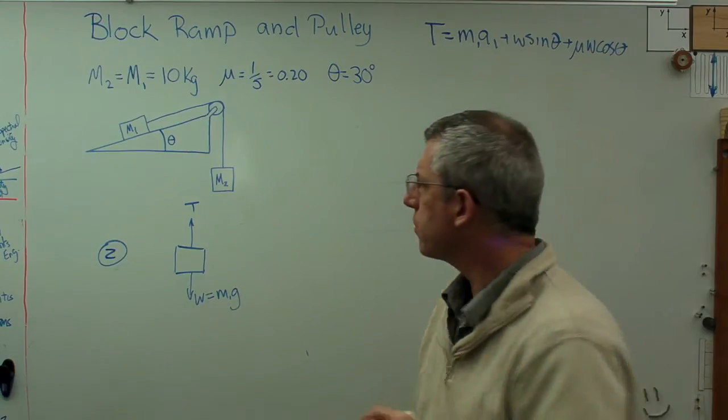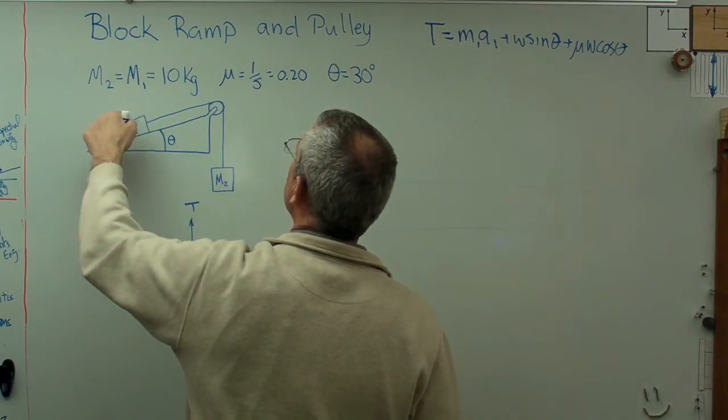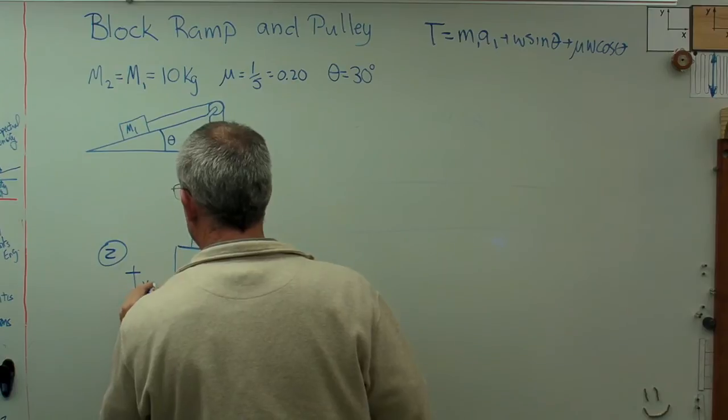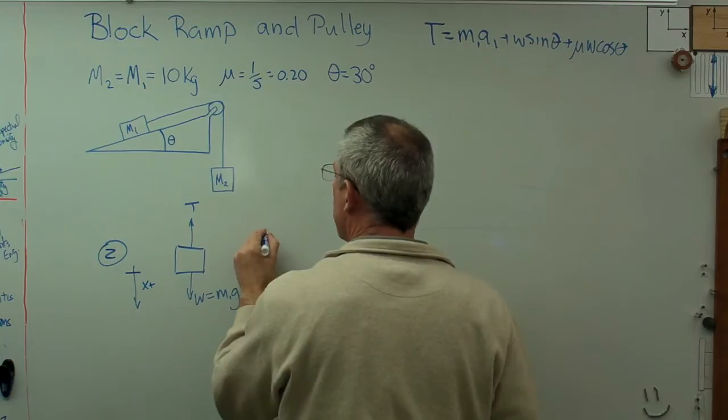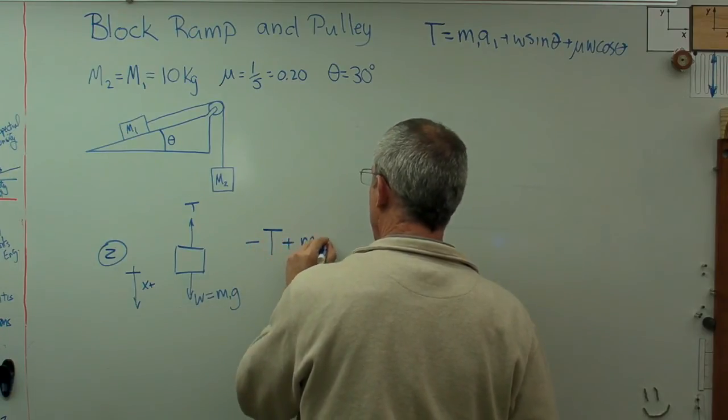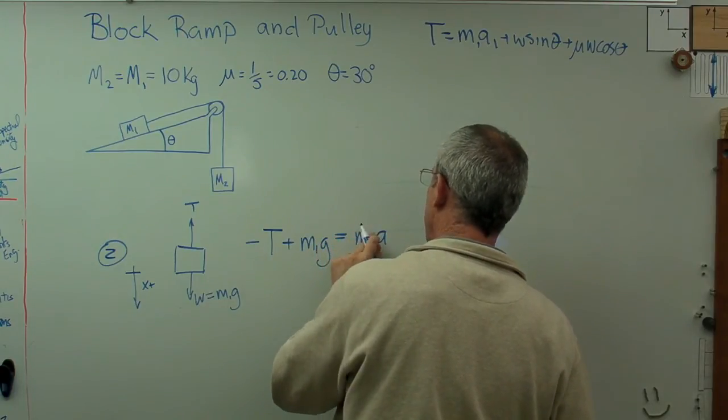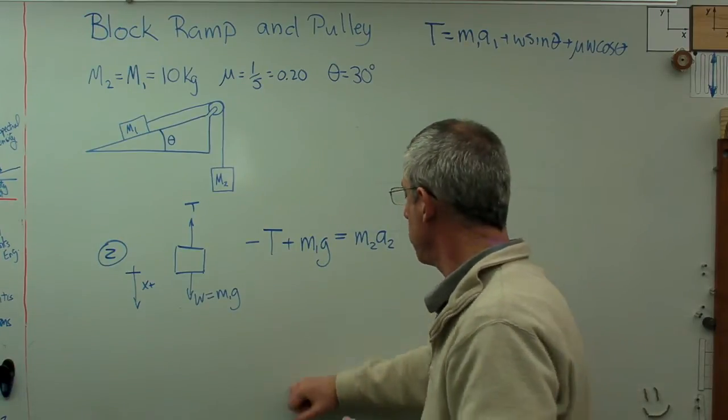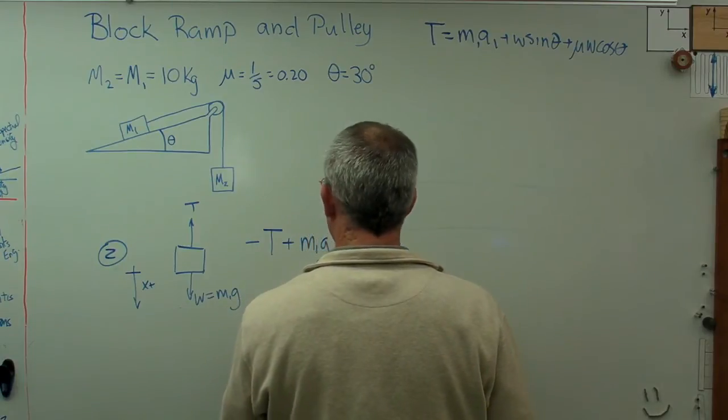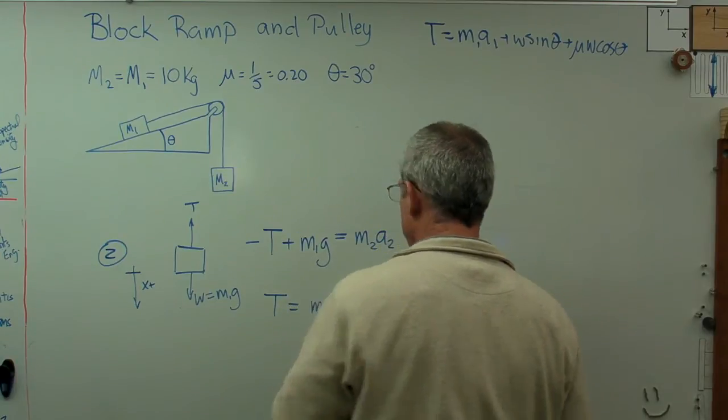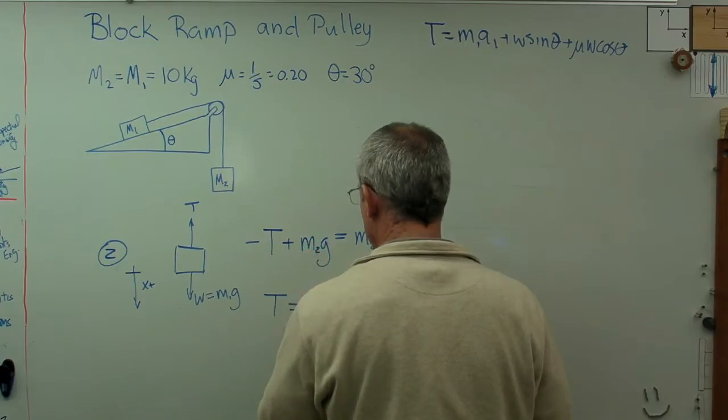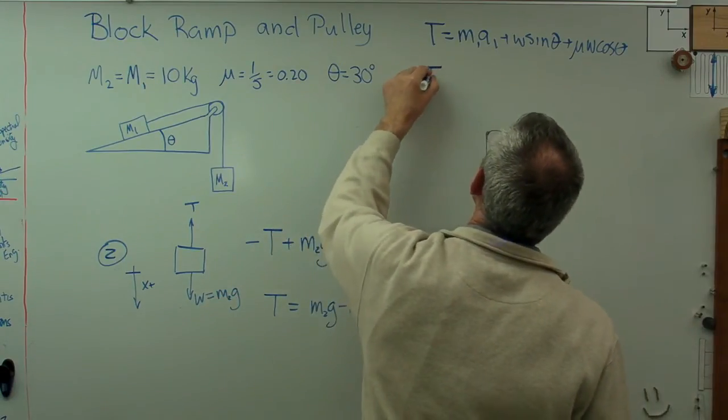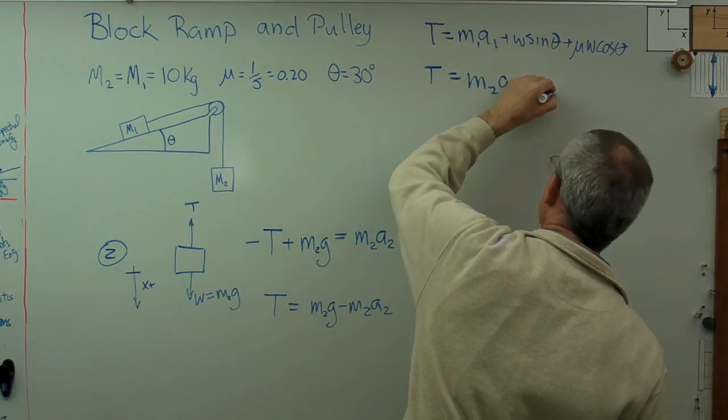What about the acceleration? In the first one I assumed x positive was that way. If this block is going up that way and that's positive motion, then positive motion this way I'm going to assume is down. So if that's positive, I'm going to get minus T plus m1 g equals m2 a2. That's my second equation of motion. I want tension on one side of the equal sign and whatever else on the other side. So T equals m2 g minus m2 a2. That's equation number two.